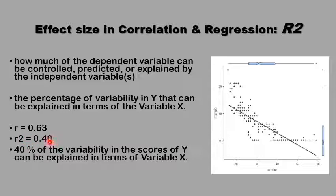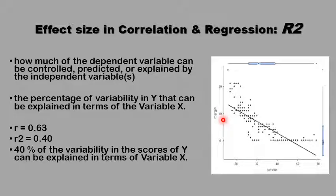The 0.40 here means that the outcome of the safety margin is 40 percent dependent on the tumor size. There are other factors that also affect the safety margin of the tumor, including the type of surgery and the relationship to the facial nerve. But 40 percent of the outcome is dependent on the size of the tumor, because we have squared the correlation coefficient and obtained 0.40 as the effect size.